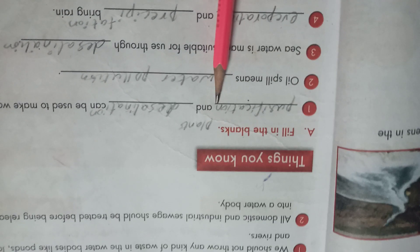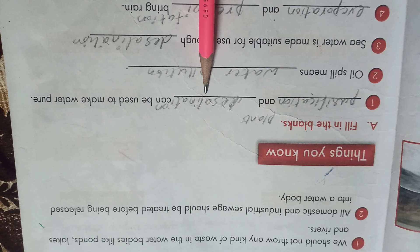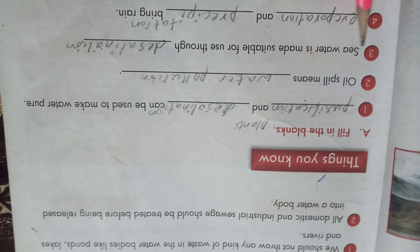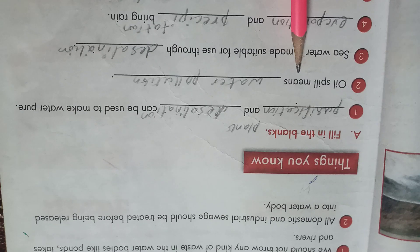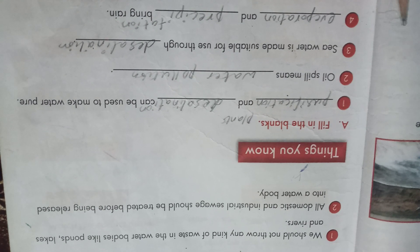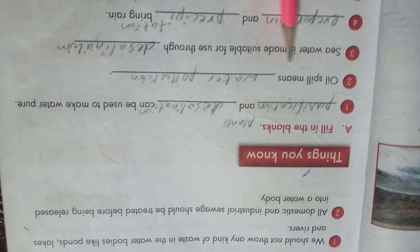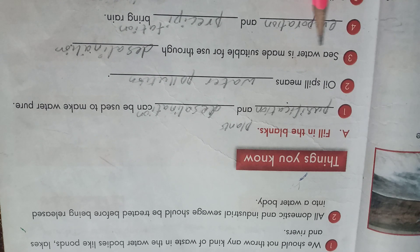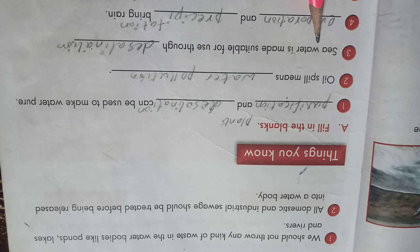We are doing the first one, we have filling blanks. Desalination can be used to make water pure. This is the two methods we have to make water pure - desalination and purification. Through desalination, water is suitable or drinkable.